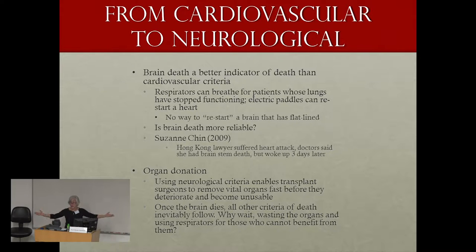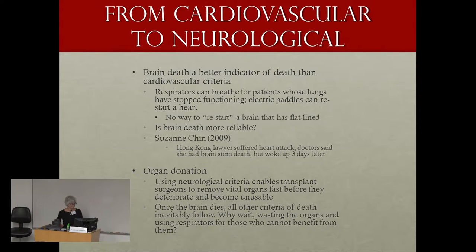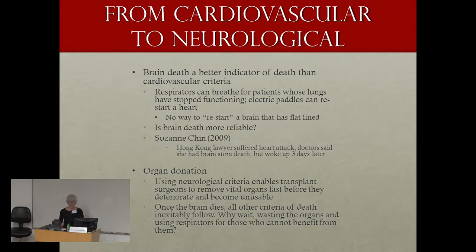We don't really know the full story — was it a miracle? Were the doctors negligent? Who knows? But there is at least this one story. The other reason behind the move from cardiovascular to neurological criteria is organ donation, because if you use the neurological criteria and say someone is dead when there's no more brain activity, transplant surgeons can remove the vital organs quickly before they deteriorate and become unusable.